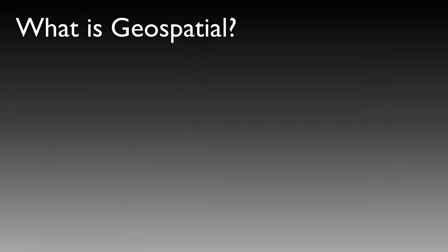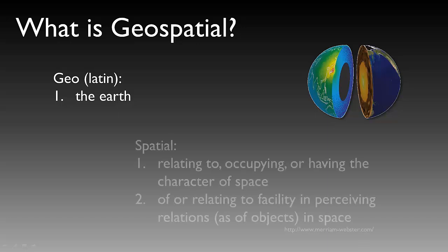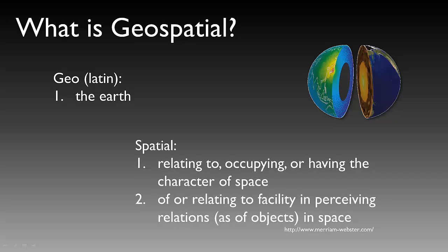As we proceed through the lecture series, it's highly probable you'll hear me use the term geospatial quite often — sometimes it can be interchanged with the word GIS. So you could say GIS analysis or geospatial analysis. The word geo is Latin and refers to the Earth, while spatial relates to occupying or having characteristics of space, or perceiving the relation of objects in some space. So geospatial refers to the relationship of objects on the surface or near the surface of the Earth.